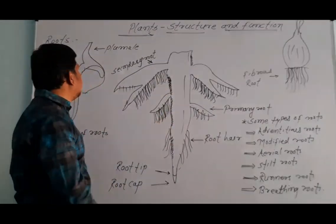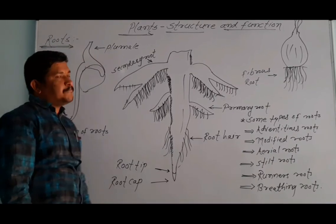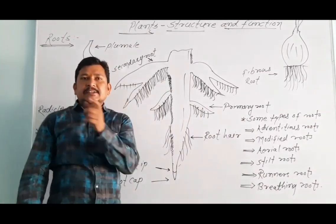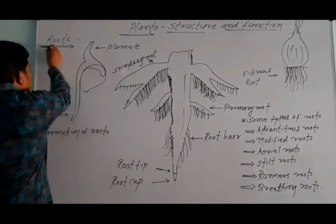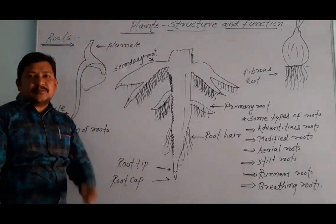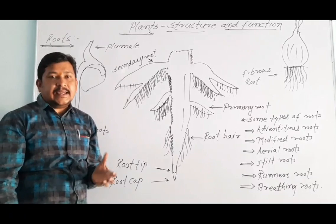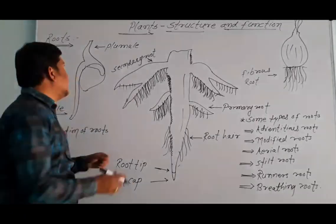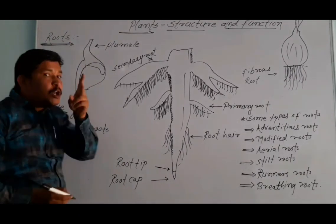Let's start with roots. Roots are the parts of the plant that grow below the soil. Roots provide support to the plant — they are the part that holds the plant firmly in the ground.